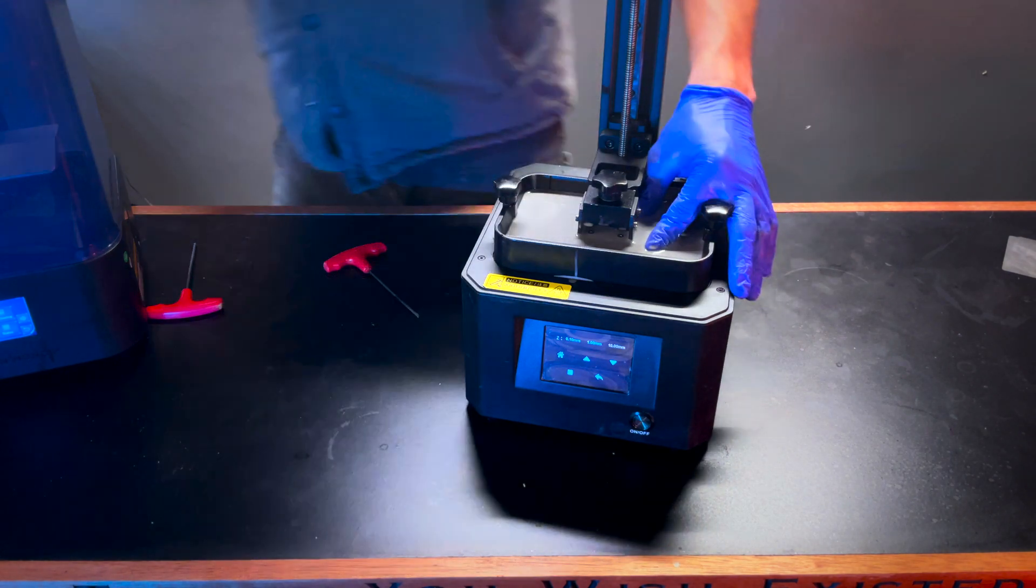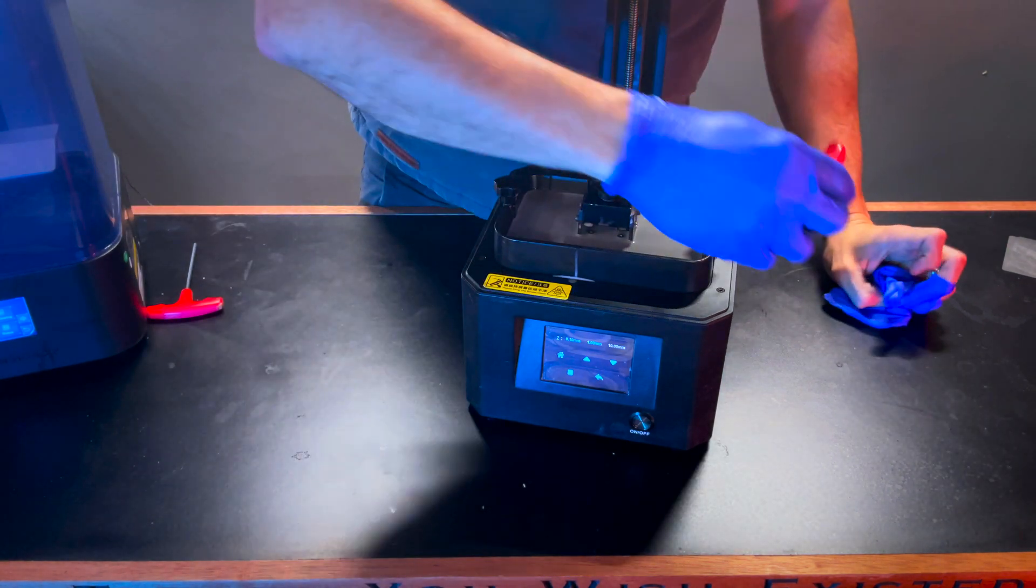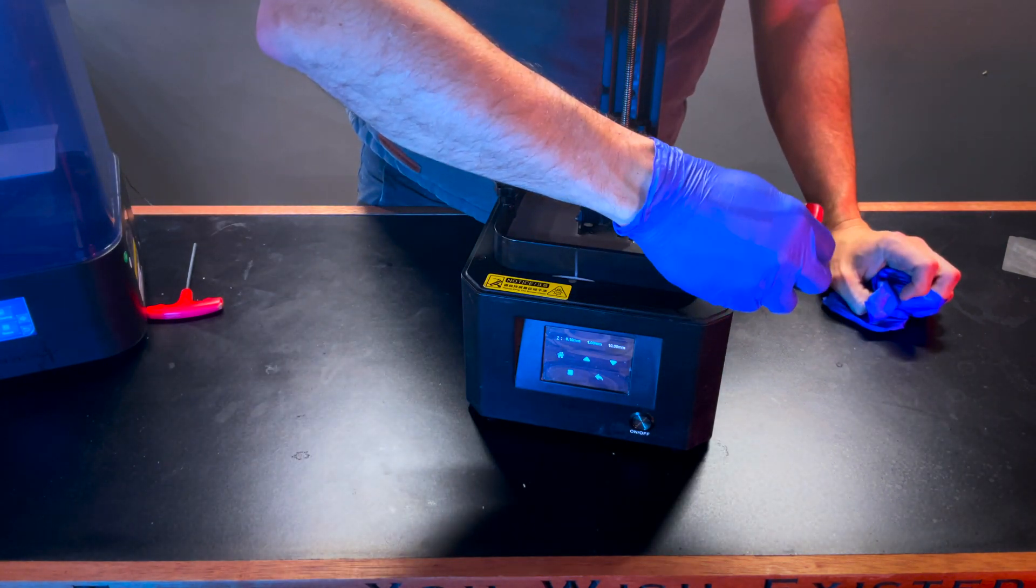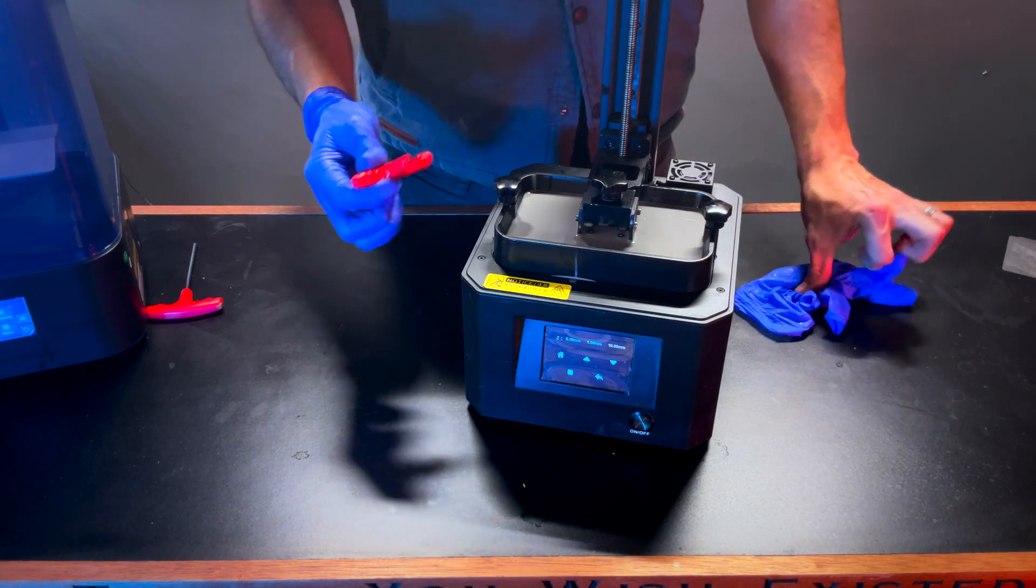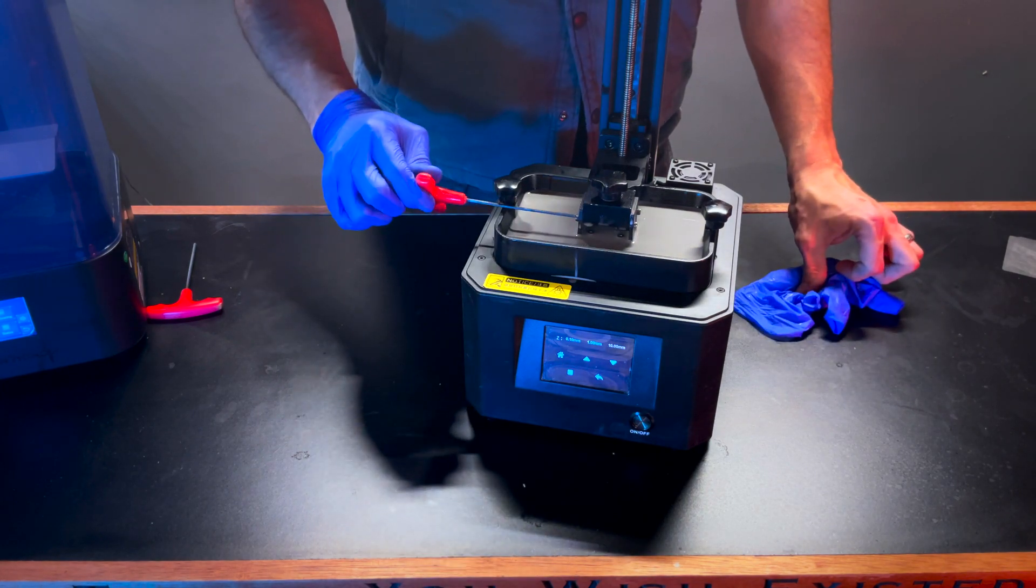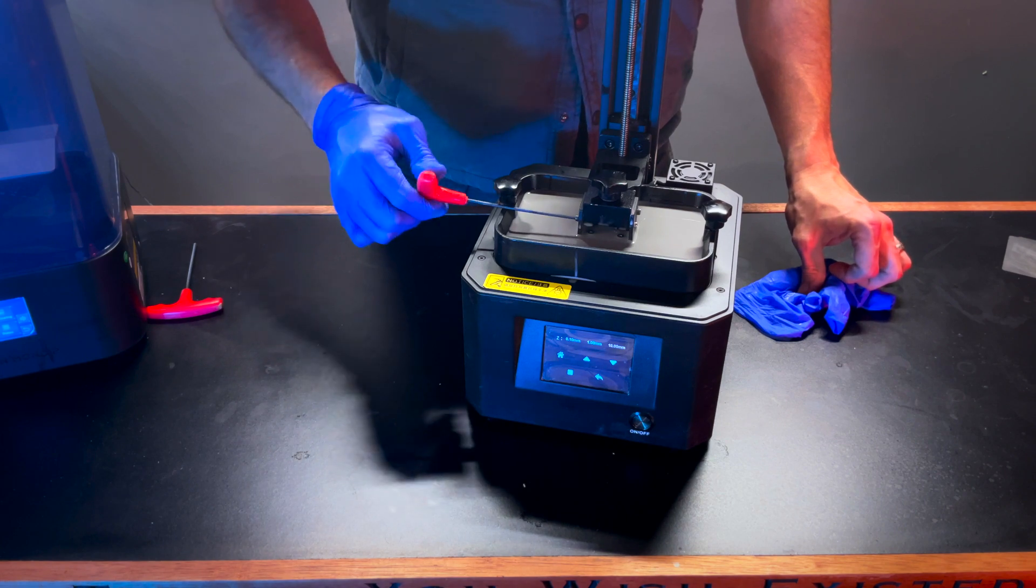I'm going to grab a paper towel and go ahead and snug the last two down here. And these long-handle Allen keys are great for this because you can simply go from the side of your resin vat here and it will reach long enough, which is great.